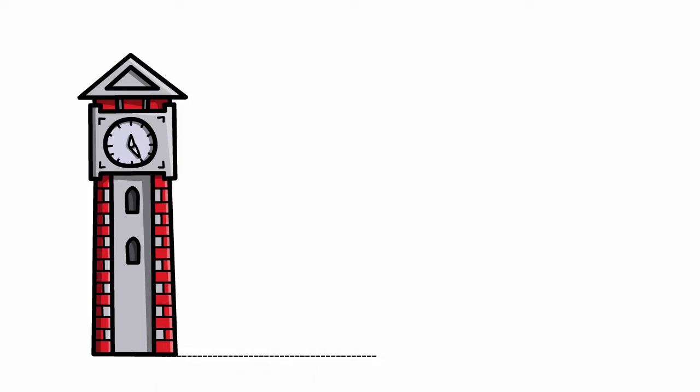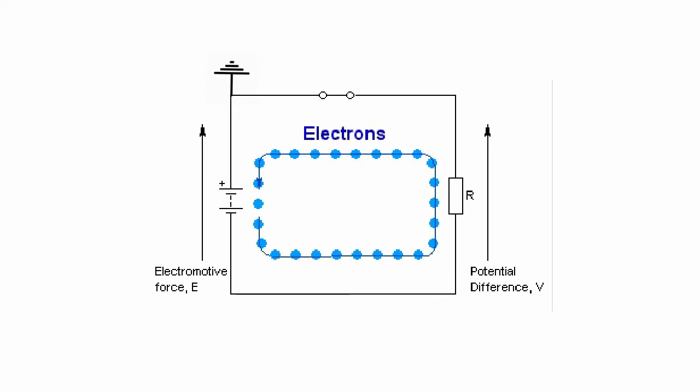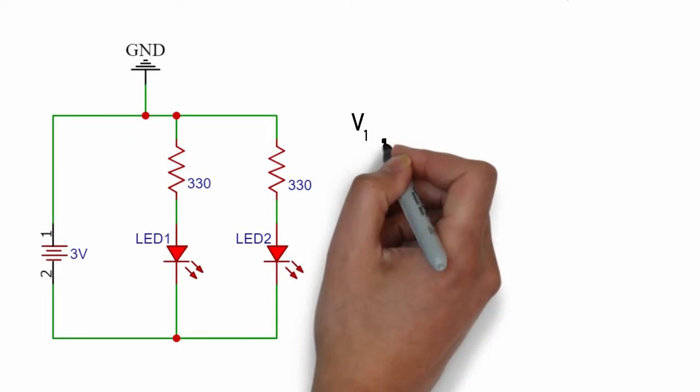Suppose that I am dropping a ball from the top of a tower and I am repeating this process but after changing the position of my coordinate system every time. So will the ball get affected? Obviously no. The same is true with electrons. Electrons do not know about our reference point or ground. They keep on flowing from the negative terminal to the positive terminal no matter where our reference point is.